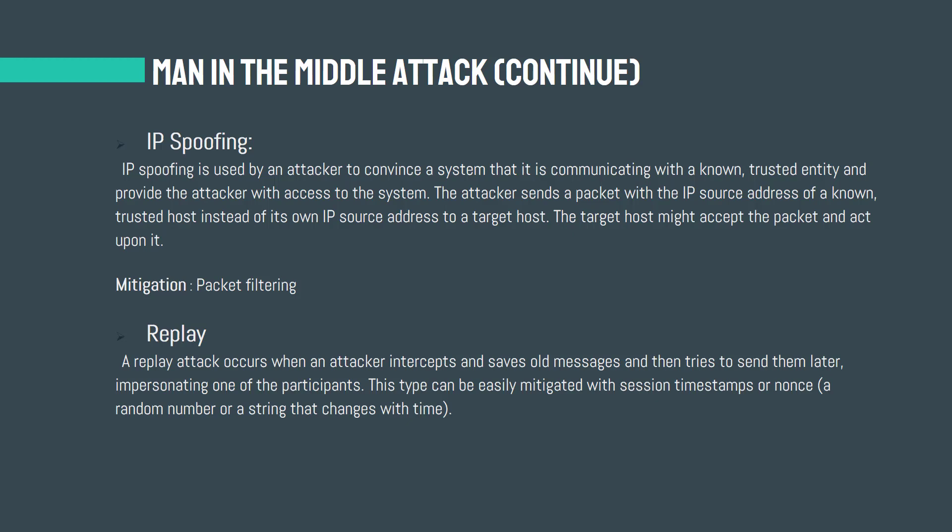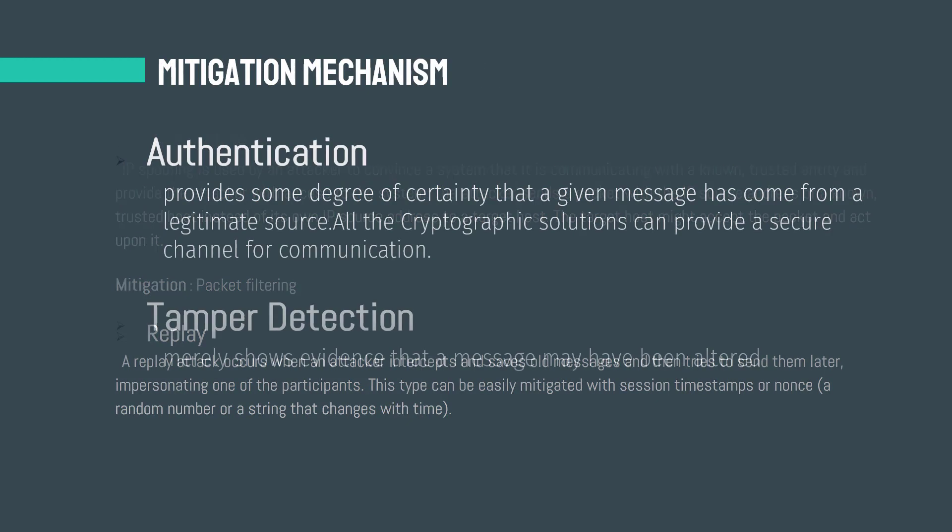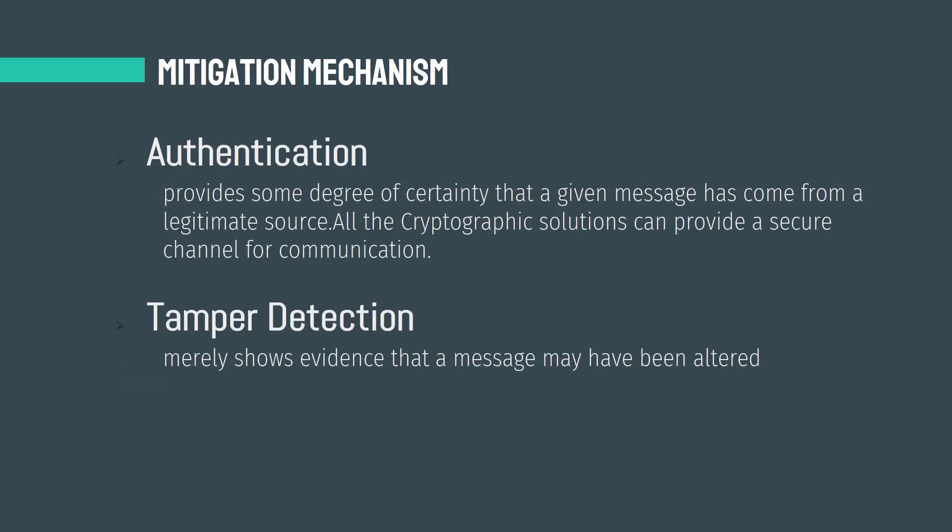Now we have a little familiarity with the man-in-the-middle attack and some mitigation mechanisms. In general, the mitigation mechanisms for man-in-the-middle attacks can be categorized into two subcategories: authentication and tamper detection. Authentication provides some degree of certainty that a given message has come from a legitimate source. For authentication, there are many techniques like digital certificates and other methods that will be covered in the next chapters of this course.